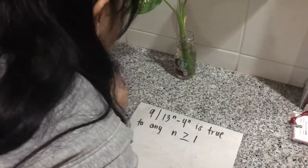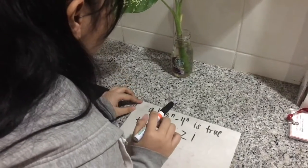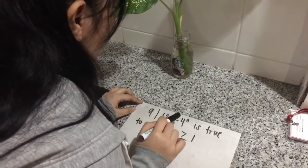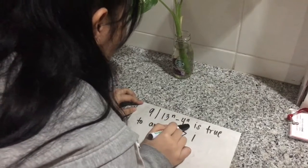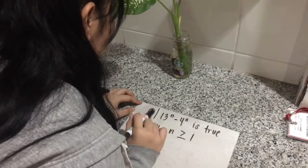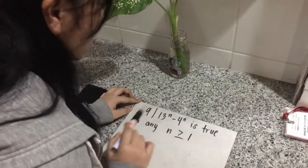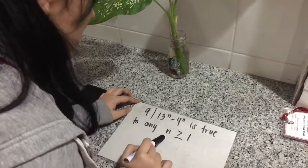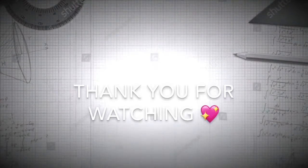Therefore, we conclude that 13 raised to n minus 4 raised to n is divisible by 9 is true for all n greater than or equal to 1.